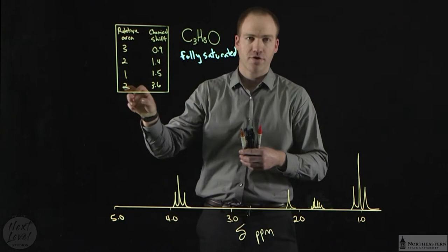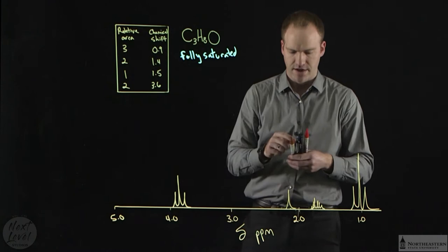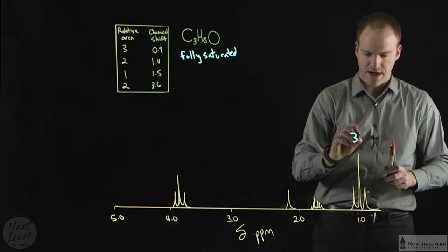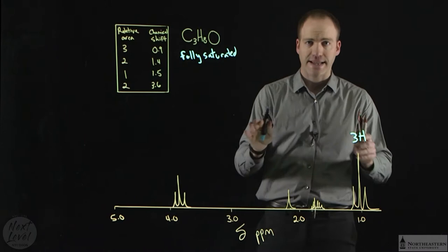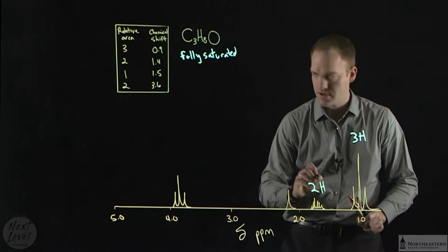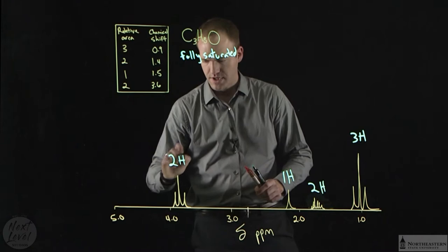Here I have three, four, five, six, seven, eight, so my integration matches my unknown formula. That's good news; I don't have to do any multiplication to get to my signals down here. So I'm going to go ahead and annotate this and say this signal at 0.9 is worth three hydrogens. When you see three hydrogens written above a signal like this, that is definite. There's three protons here, there's two protons here, there is one proton here, and there are two protons here.